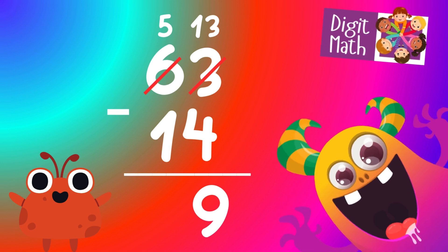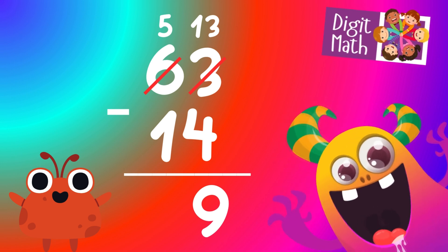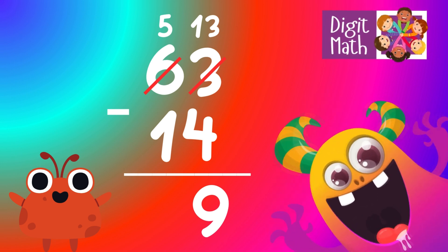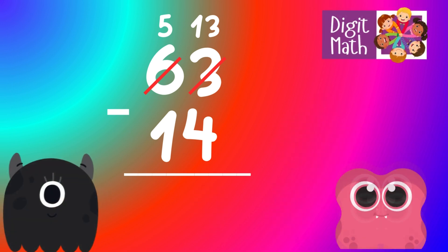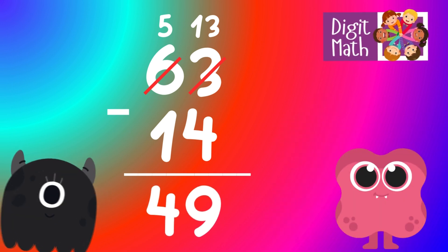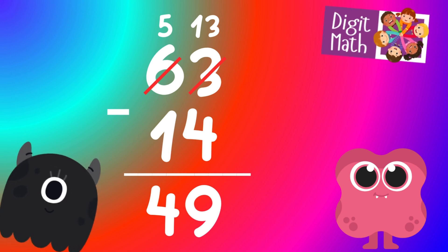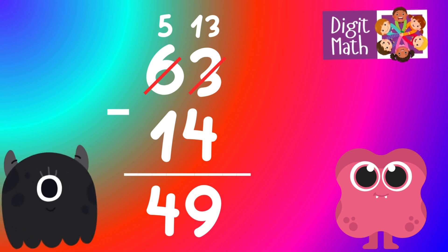In the Tens column, we now have 5. Subtract 1 from 5, which equals 4. So the final result is: 63 minus 14 equals 49.